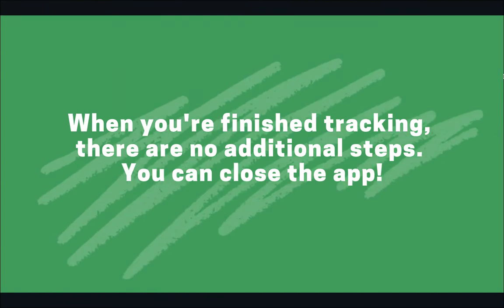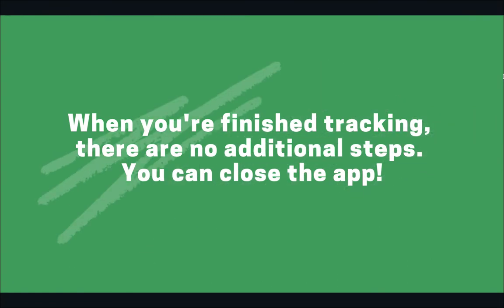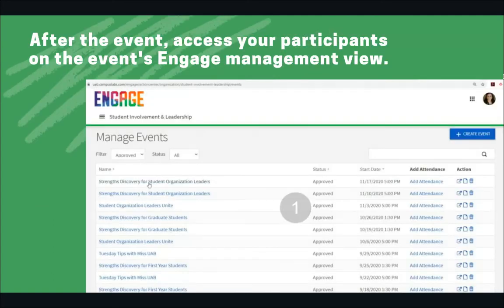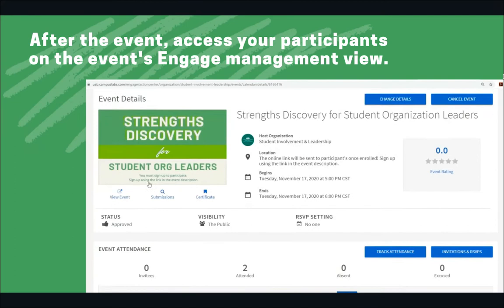When you're finished, there are no additional steps. You can close the app and all of your attendance information will be saved. To later access the list of attendees, log in to Engage, manage your organization, and then click on the event name.